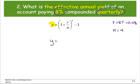Replace into the formula to find the effective annual yield. So y equals the quantity 1 plus 0.08 divided by n raised to the power of, and in this case, the n is 4, so divided by 4, raised to the power of 4, minus 1.